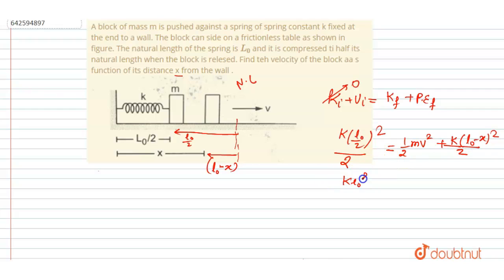Now you can see this is K L0 square by 4 into 2 equals to half MV square plus this. So just cancel this 2 term. This will get cancelled out. Now you want this V as a function of x.